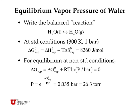We can rearrange this equation by setting delta G equal to zero. So P, the equilibrium vapor pressure of the liquid, is equal to e to the minus delta G zero of vaporization divided by RT, which at 300 Kelvins is 0.035 bars or 26.3 Torr.